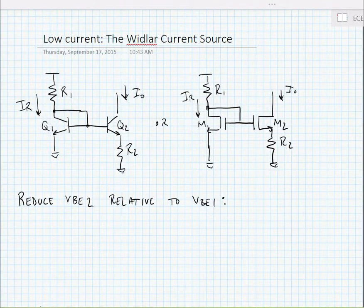In the last video, we talked about the problem of trying to generate very small reference and output currents. Our solution is to use the Widlar current source, which is shown here in BJT and MOSFET form.